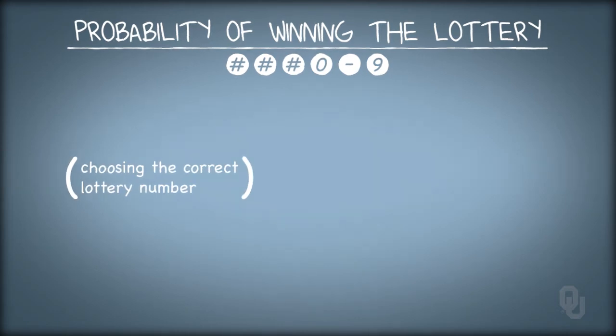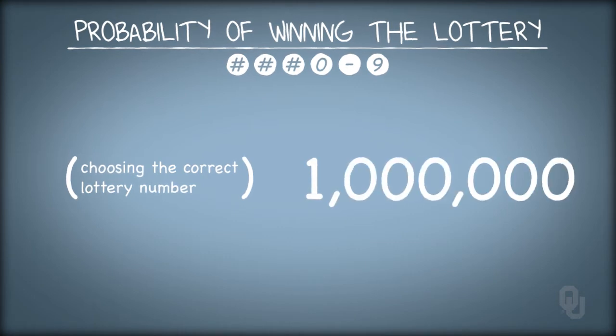We'll discuss in detail a little later on, but as it turns out, there are 10 to the 6, or 1 million, different ways to pick a lottery ticket. So the total number of outcomes that could occur is 1 million.